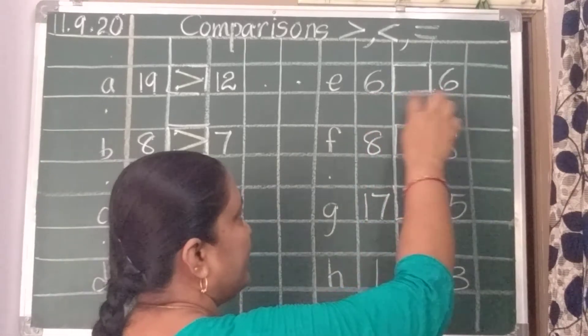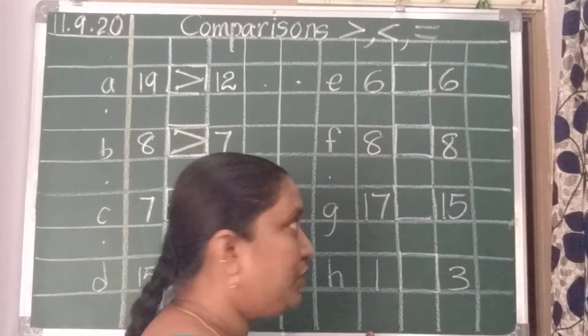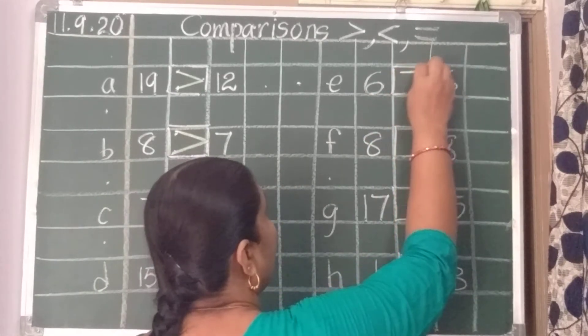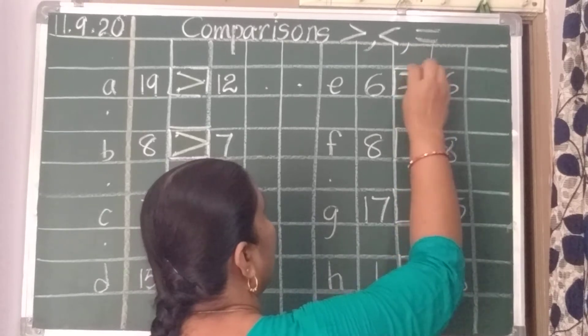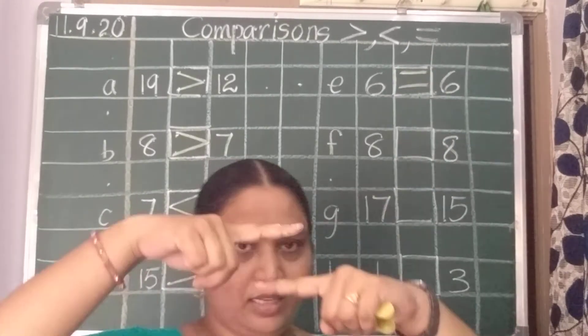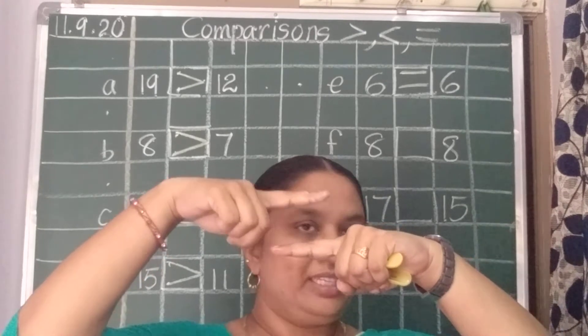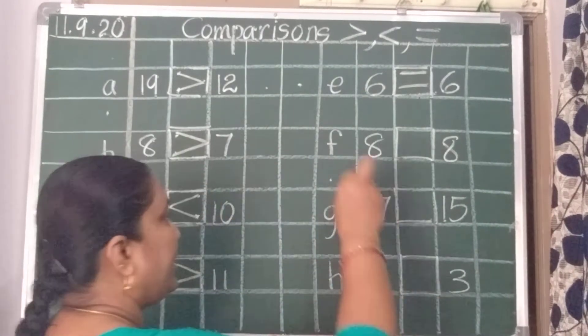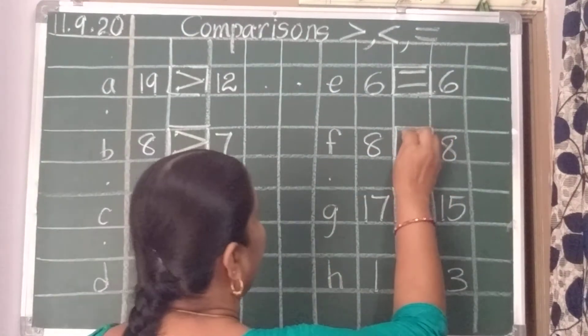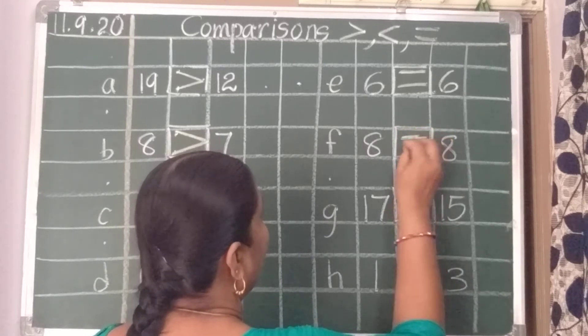6 and 6. Both numbers are equal. The same numbers. Both sides. So, equals to. These two lines, like this. This is called equals to. Again, same number. 8 and 8. 8 is equals to 8.